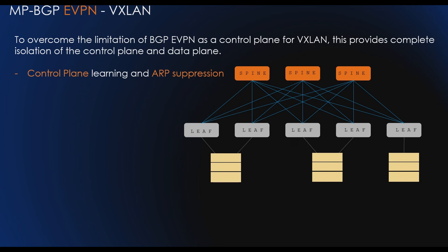The first benefit BGP EVPN provides for VXLAN is control plane learning and ARP suppression. Once a leaf learns a MAC address via ARP, BGP route type 2 advertises it to all leaves. We know how well BGP scales, so there is no problem learning hundreds of thousands of MAC entries. MAC addresses are stored as routing entries in the routing table, enabling multiple active paths between data centers based on the next hop from which they were learned.